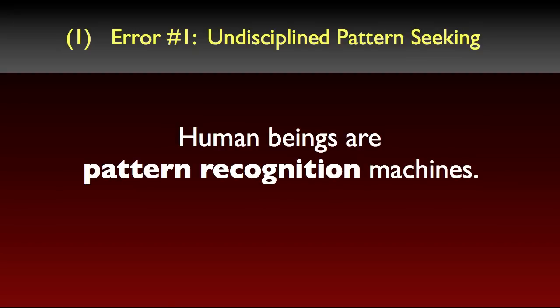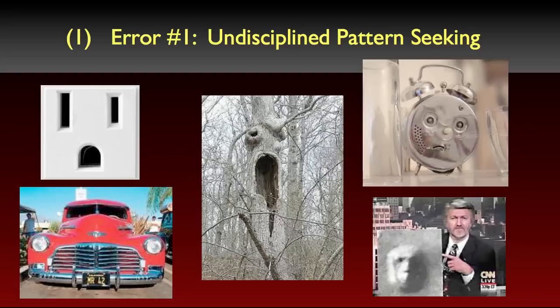We're bombarded by sensory data, and our natural disposition is to seek out patterns in the data and attribute meaning to those patterns. An obvious example is our tendency to see faces in anything that remotely resembles the configuration of features on a human face — an electrical outlet looks like a face, the front grill of a car looks like a face, the nuts of a tree look like a face. Face recognition is important for social primates like us. It's very important that we learn to read the facial cues of other people to know whether they're friendly or a threat. So we've evolved this very specialized and sensitive mechanism for facial recognition, and as a result we're basically hardwired for it. But this means we're prone to a certain kind of error as well, where we see faces in inanimate things that don't really have faces.